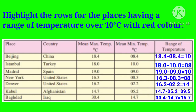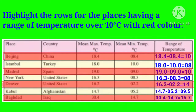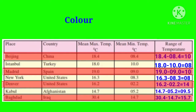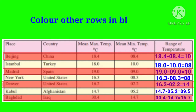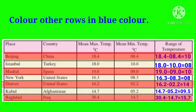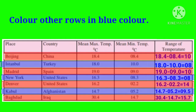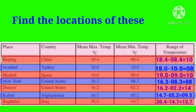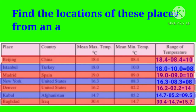Highlight the rows for places having a range of temperature over 10 degrees Celsius with red color. Colour other rows in blue color. Find the locations of these places from an atlas.